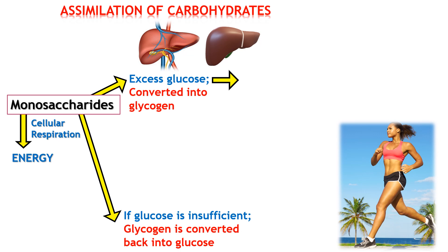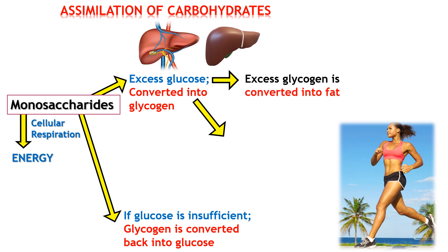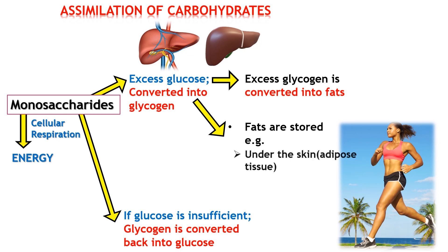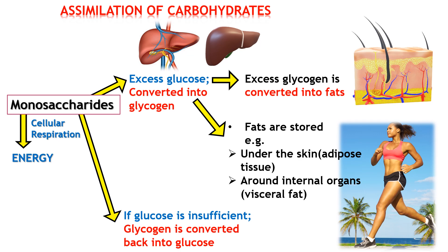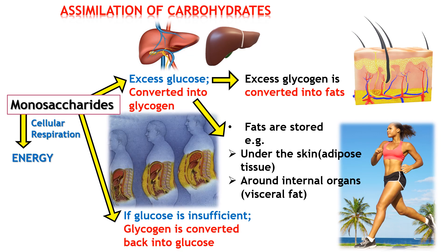Back to excess glucose: when glucose is in excess within the blood or body, it can be utilized in different ways. Excess glucose can be converted into glycogen, and then the excess glycogen can also be converted into fats. Those fats are then stored in various places — they can be stored under the skin in the form of adipose tissue. That yellow structure under the skin visible in the image is actually fat produced as a result of conversion of excess glycogen into fats.